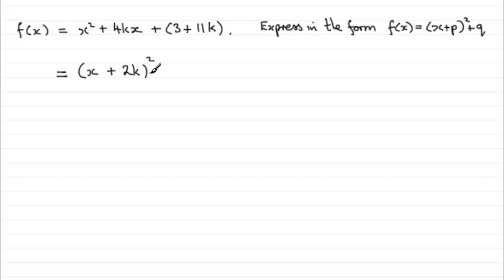Now, if you were to expand x plus 2k all squared, what would you get? Well, we should know this straight off, but what I'll do is we'll just write down x plus 2k multiplied by another x plus 2k.